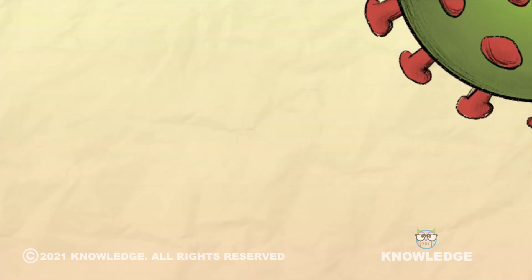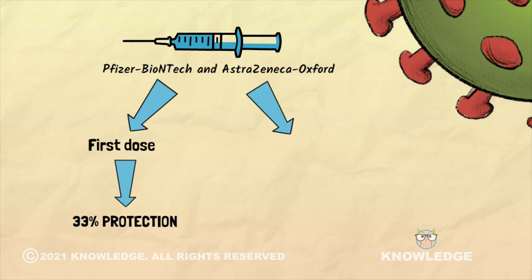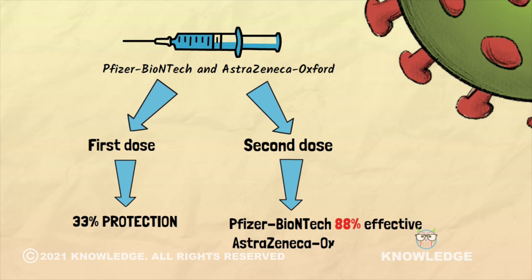Now let us see what is the effect of vaccine on this new Delta Plus variant. A study conducted has found that both Pfizer-BioNTech and AstraZeneca-Oxford, also called Covishield vaccine in India, provide 33% protection against the new Delta variant after the first dose. But two weeks after the second dose, the Pfizer-BioNTech vaccine was found to be 88% effective against the Delta variant, while the AstraZeneca-Oxford vaccine was 60% effective.